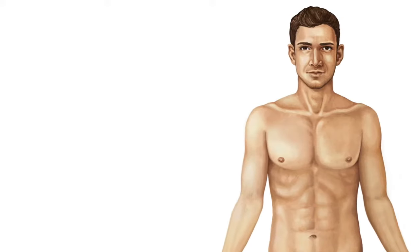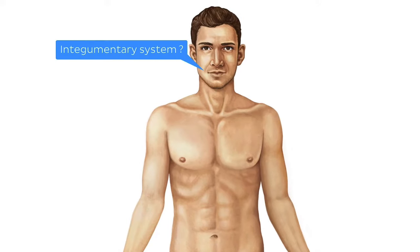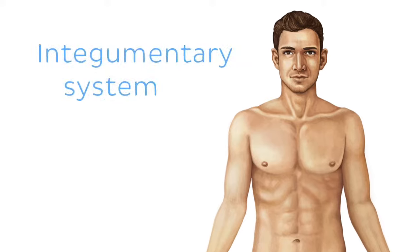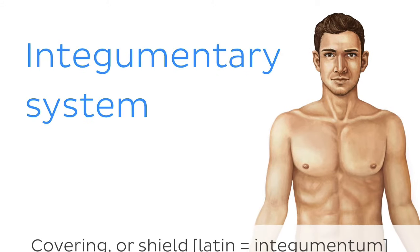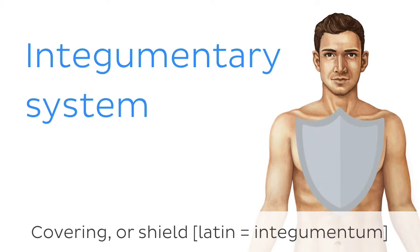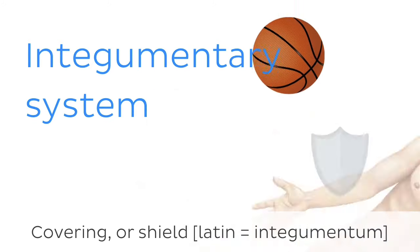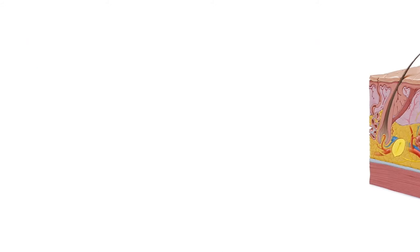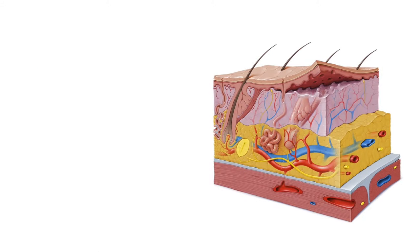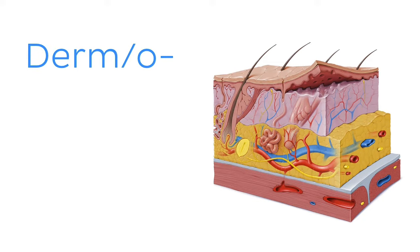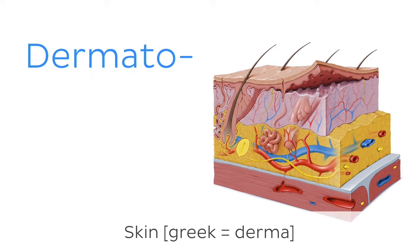The first thing you're wondering is why on earth is the skin known as the integumentary system. Well, the term comes from the Latin integumentum, which means covering or shield. This makes sense given that our skin protects the body from infection, dehydration, UV radiation, and injury.